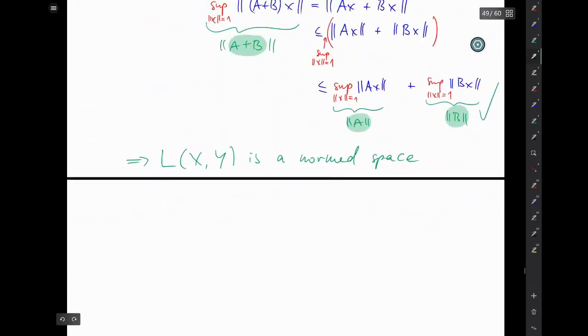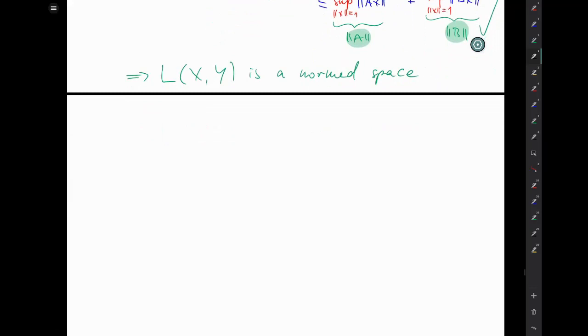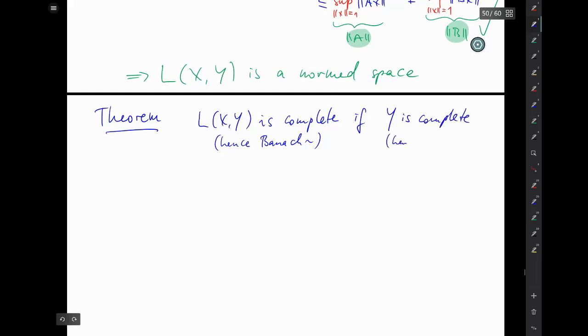Can it get any better? Well, of course, a Banach space would be better, so we need completeness. How do we get completeness of L(X,Y)? We probably need completeness for X and Y, or maybe just one of them. Let's see. Theorem: L(X,Y) is complete if Y is complete, hence Banach space. That's interesting - it's completely independent of the completeness of X. It's all about Y.